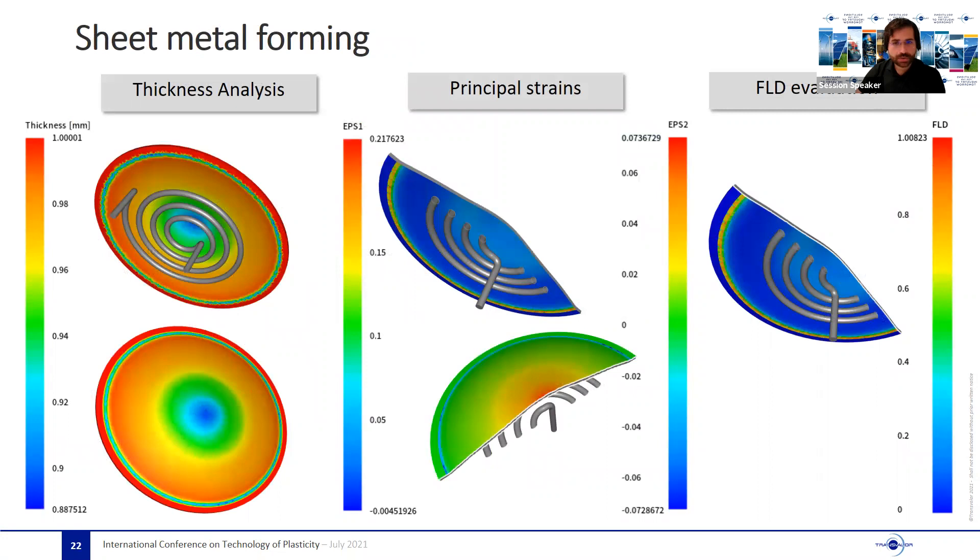With these tools at hand, it is now possible to simulate with FORGE sheet metal forming applications with fully 3D elements and easily compare the results with classical tools used for shell elements, such as thickness distribution, principal strains at surface, and of course the evaluation of the FLDs. This opens the door also for integration with damaged models, which are intrinsically 3D phenomena, and that are already available within our models library.